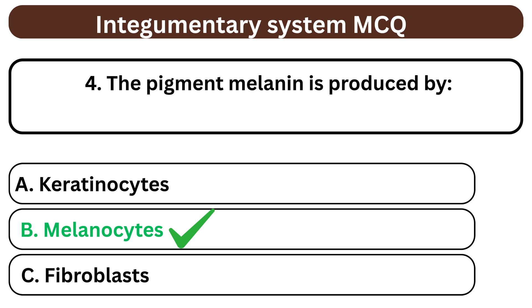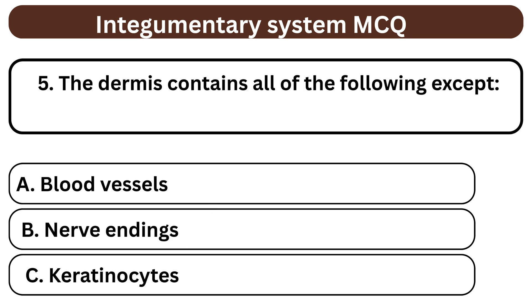Question 5. The dermis contains all of the following except A. Blood vessels. B. Nerve endings. C. Keratinocytes. The answer is C. Keratinocytes.